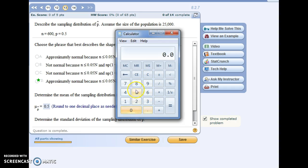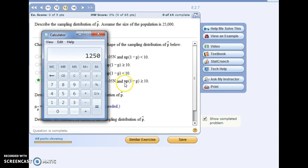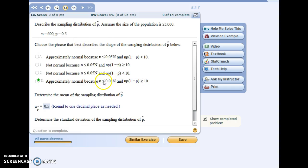If you check out what 5% of 25,000 is, it's 1250. So this definitely holds true, that our sample size is less than or equal to 5% of the population size. And then this one here, we would do 600 for n times our proportion value, and then times 1 minus 0.5, which would again be 0.5. So I'll multiply by 0.5 again. And we get 150. And 150 is greater than or equal to 10. So since they both were true, we have that our shape of our sampling distribution of p-hat will be approximately normal.